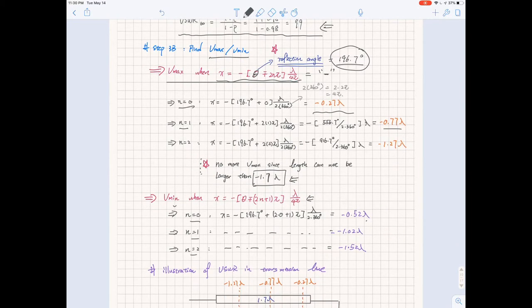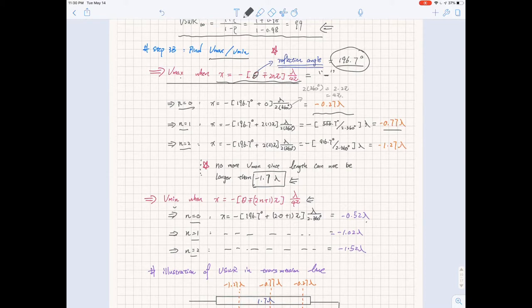As we're moving toward the generator it will become more negative. We can find out the location of different vmax by changing the value of n. We'll start by plugging in n equal to 0, which gives us negative 0.27 lambda. We can do this by changing n to 1 and 2. Keep in mind that vmax cannot be larger than 1.7 lambda because that's the length of the transmission line. So if we plug in n equal to 3, this will eventually give us negative 1.77 lambda. This is not possible because it's not in the transmission line anymore.